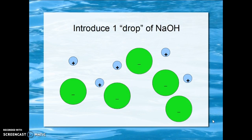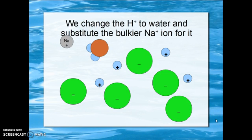When we introduce one drop of sodium hydroxide, we're getting one pair of ions. The hydroxide immediately neutralizes a hydrogen ion, leaving the sodium ion behind. We have exchanged the hydrogen ion for sodium ions. We change the hydrogen ions to water by reacting it with hydroxide ions, and we've substituted the bulkier sodium ion for the very small hydrogen ion, all surrounded by water.